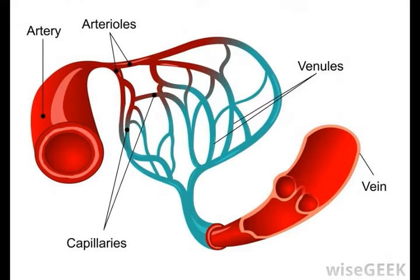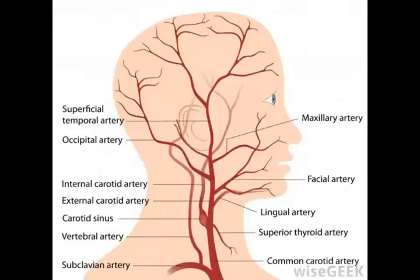The anterior cerebral artery provides blood to the frontal lobes. The frontal lobes are the parts of the brain that control personality, logical thinking, and voluntary movement. The middle cerebral artery supplies blood to parts of the frontal, parietal, and temporal lobes of the brain.